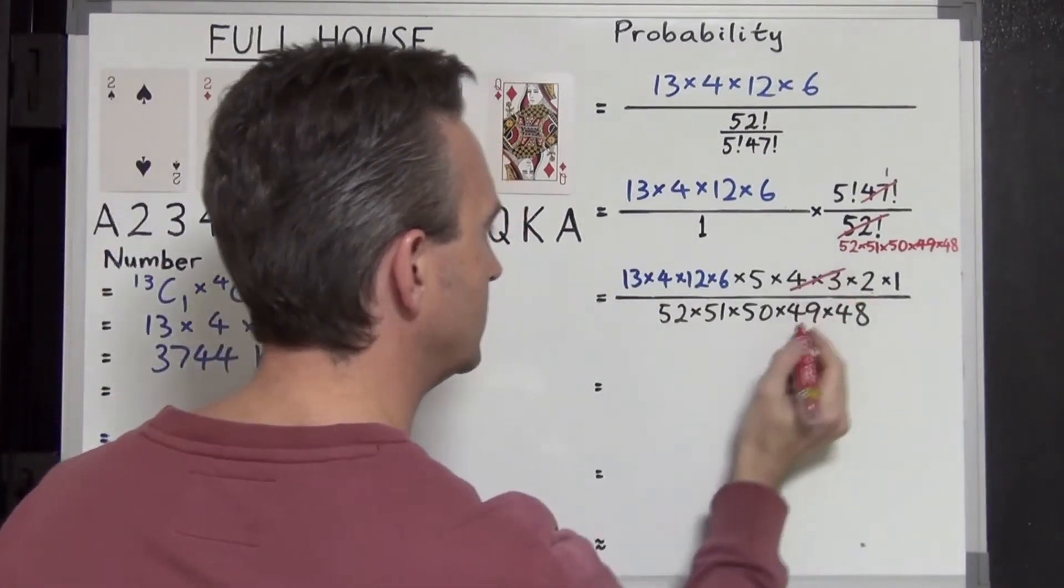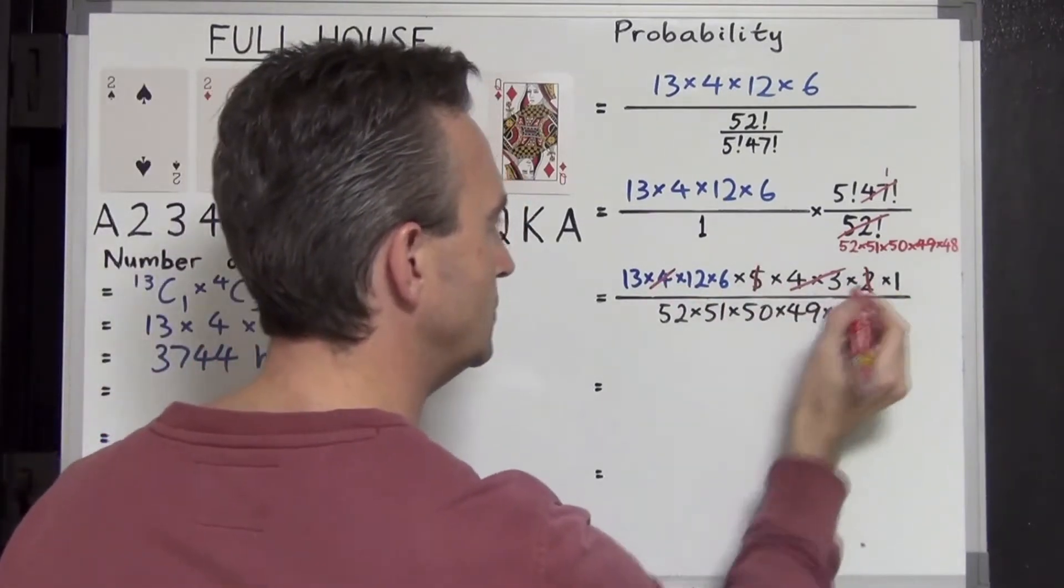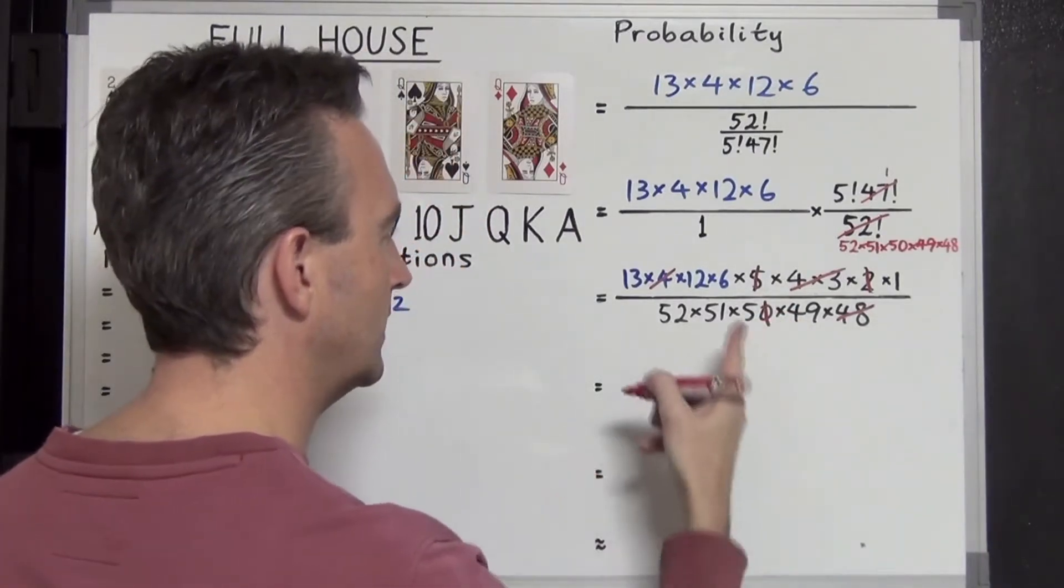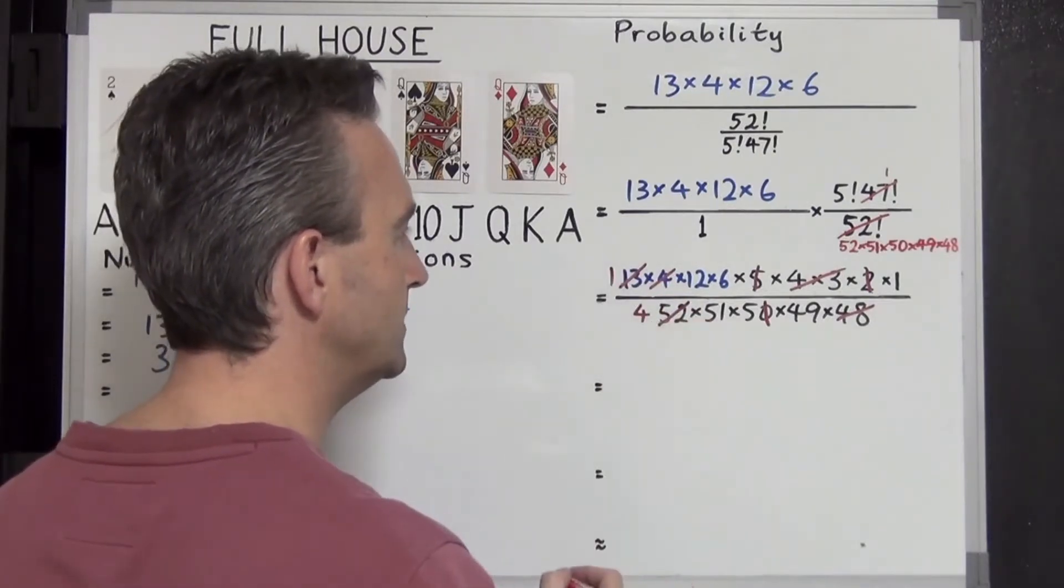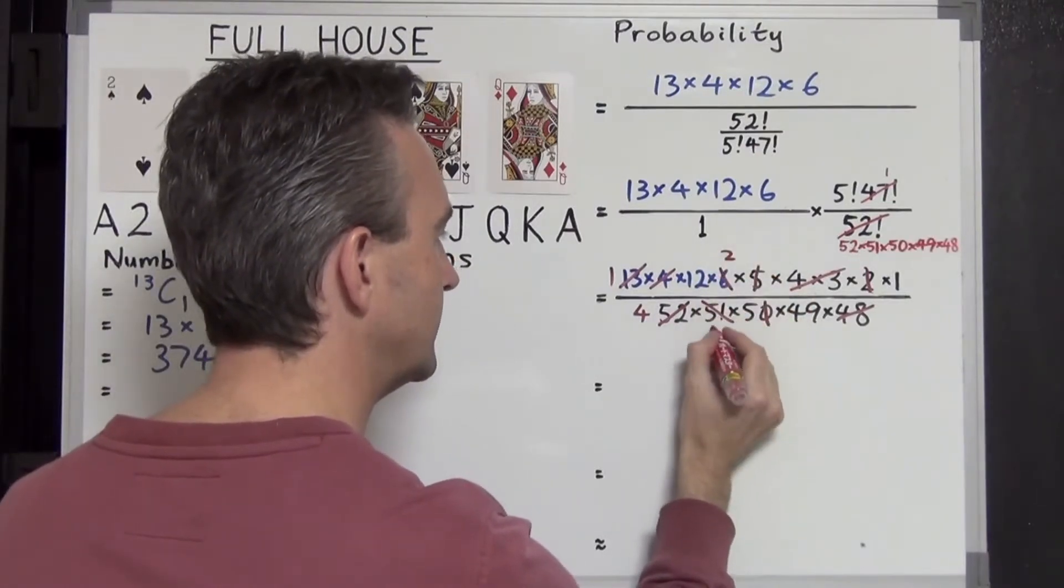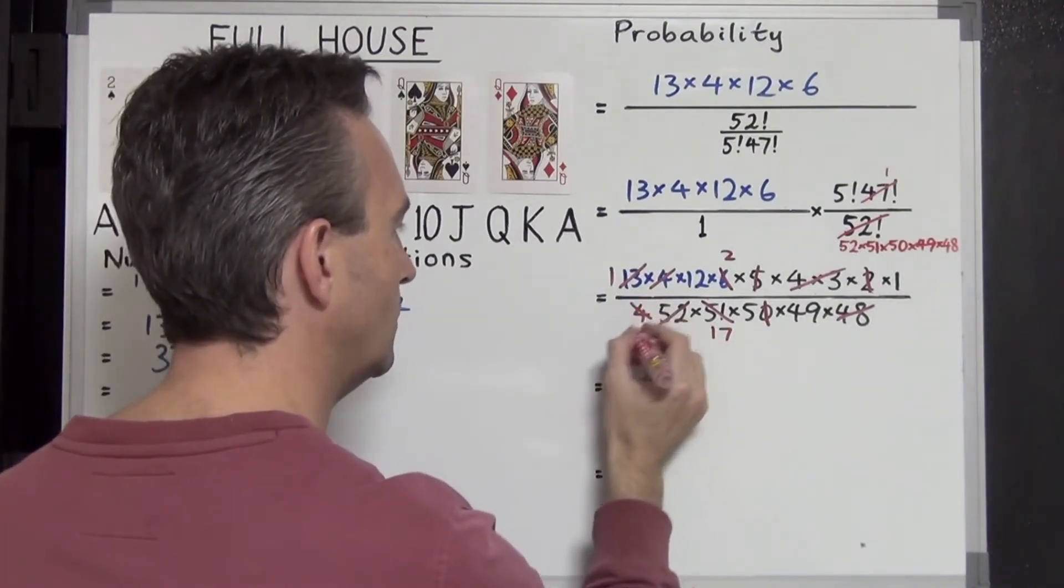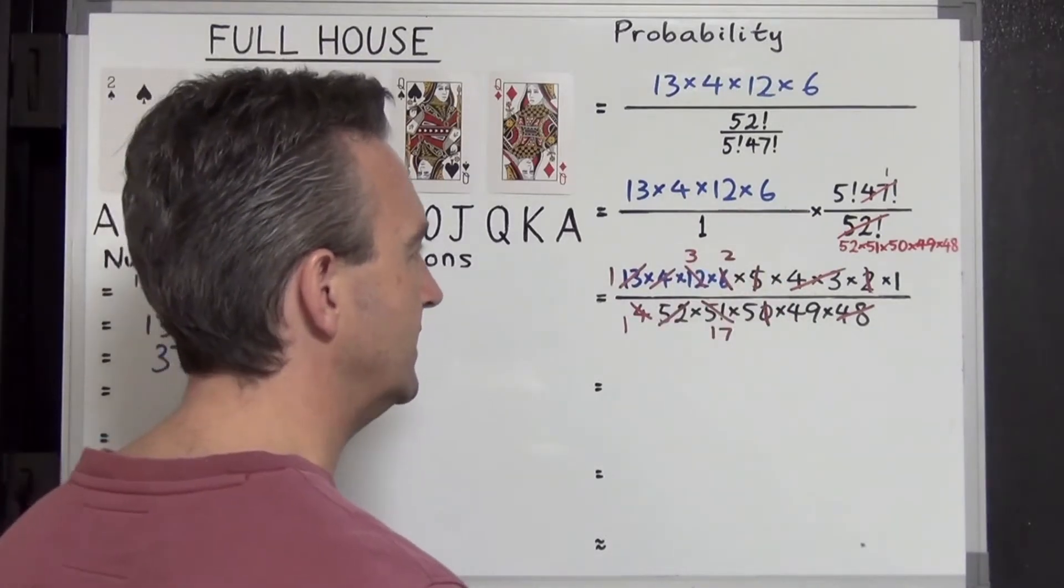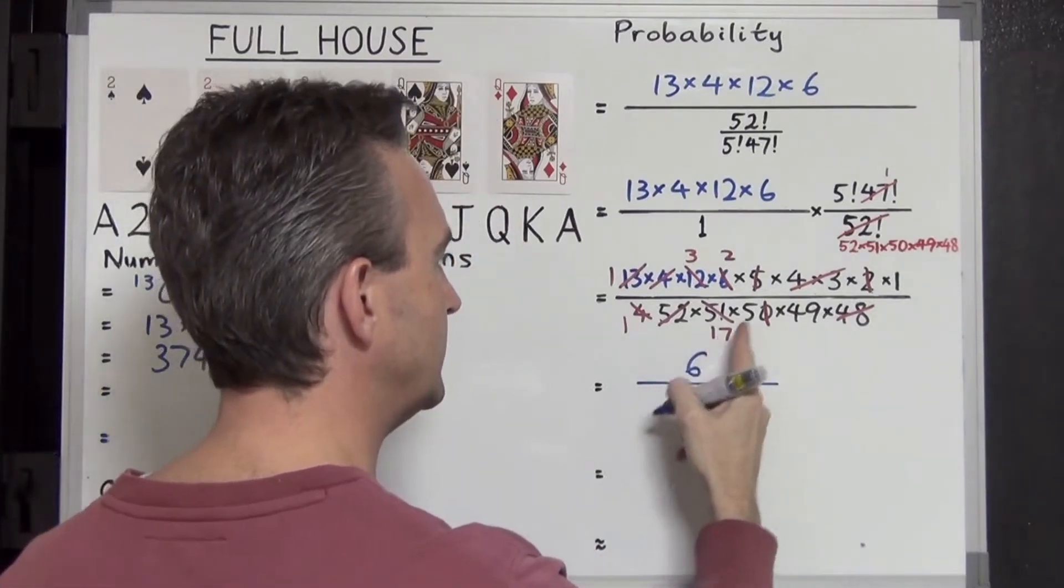Let's see what cancels. 4 times 3 is 12, 12 fours are 48. We also have 5 times 2, which cancels with 10. The 50 becomes a 5. 13 goes into 13 once, 13 goes into 52 four times. We also have 3 goes into 6 twice, 3 goes into 51 seventeen times. We also have 4 goes into 4 once and 4 goes into 12 three times. Pretty serious cancelling there. What are we left with? 3 times 2 on the top and on the bottom, 17 times 5 times 49.